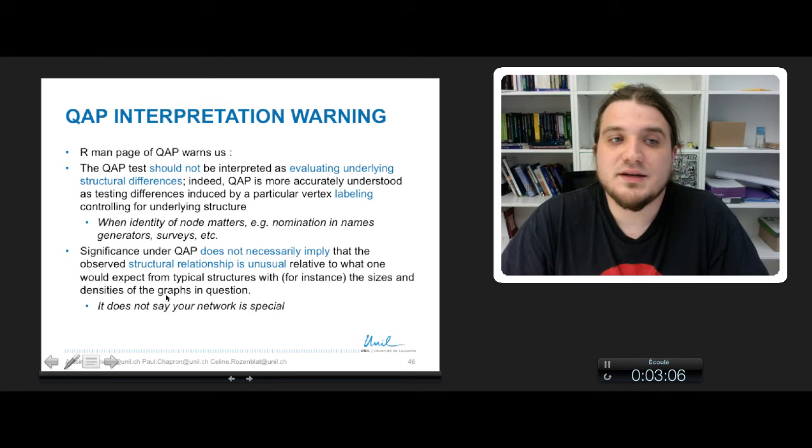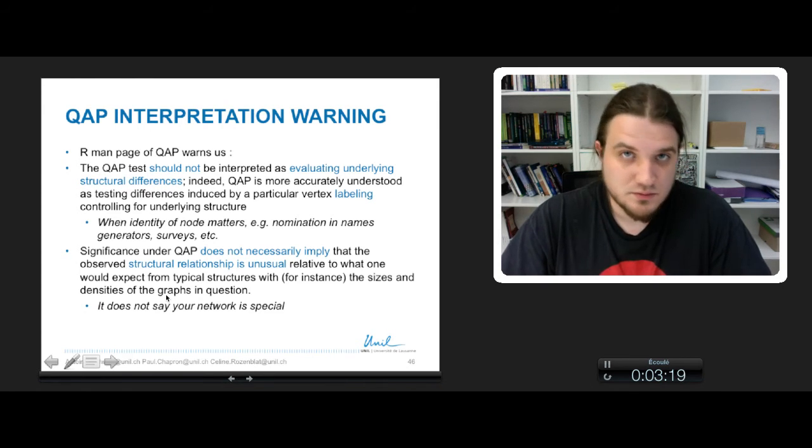The second warning is about the significance of QAP test, which does not necessarily imply that the observed structural properties of your graph differ really from any other comparable graph. So in other words, it does not say that your network is special.